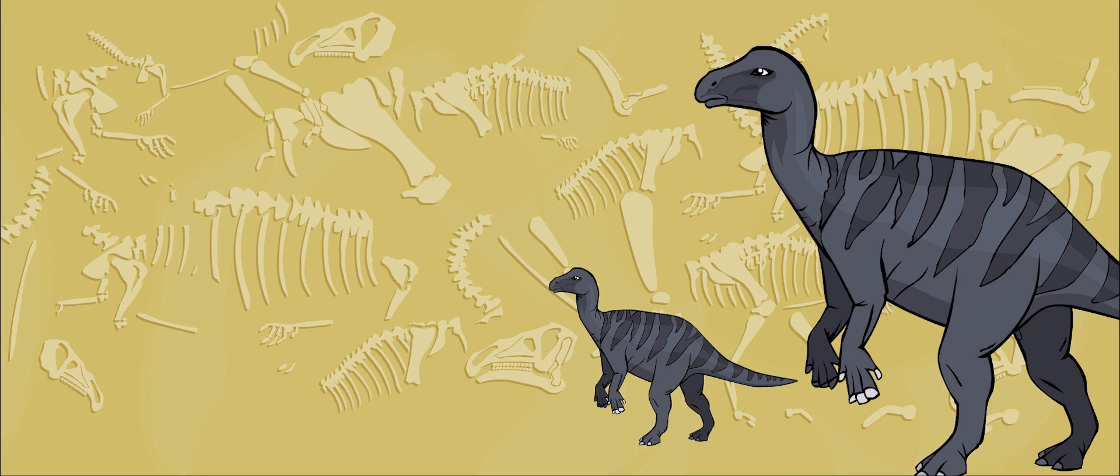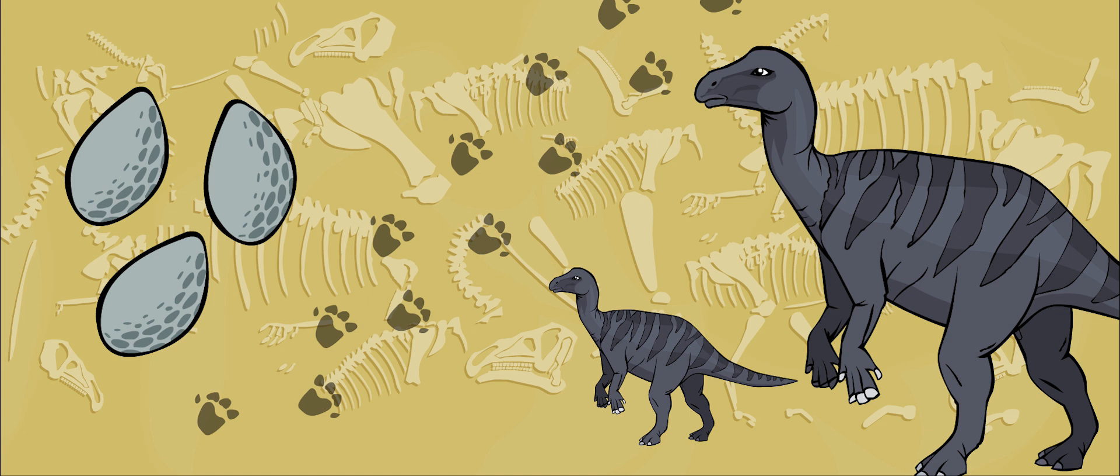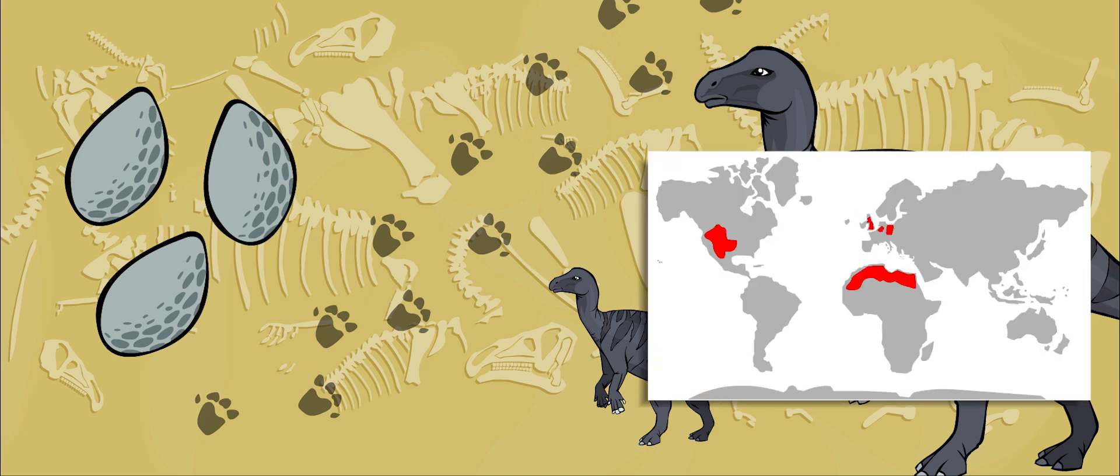Hundreds of Iguanodon fossils have been found around the world. Skeletons, footprints, and eggs have mostly been found in Belgium, England, Germany, North Africa, and North America.